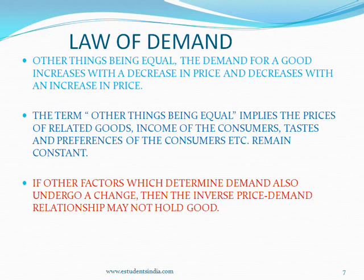Law of Demand: the law of demand expresses the functional relationship between price and quantity demanded. This is a generalization about demand. Other things being equal, the demand for a good increases with a decrease in price and decreases with an increase in price. There is an inverse relationship between price and quantity demanded. The term 'other things being equal' implies that the determinants of demand remain constant — the prices of related goods, income of the consumers, tastes and preferences of the consumers, etc. are assumed to be constant.